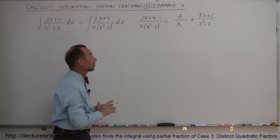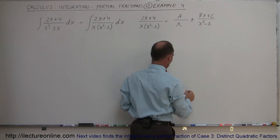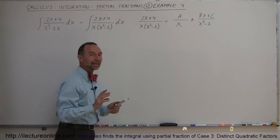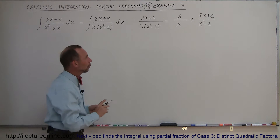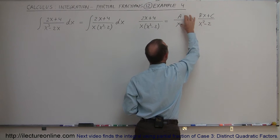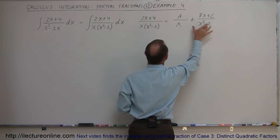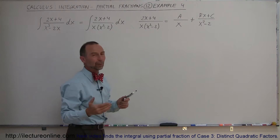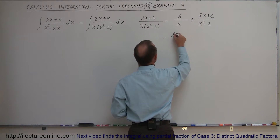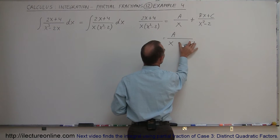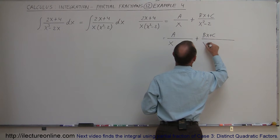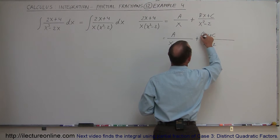Now we have three constants — a, b, and c — which we have to determine. From then on, the technique is the same as before. We're going to multiply each fraction by what is needed to get the denominators to match the original. We write a divided by x plus bx plus c over x squared minus 2, and work toward a common denominator.